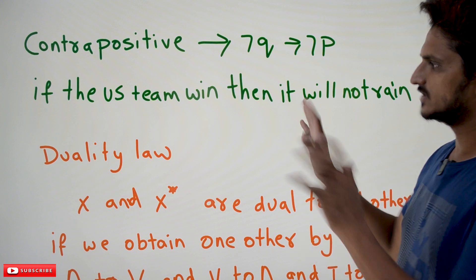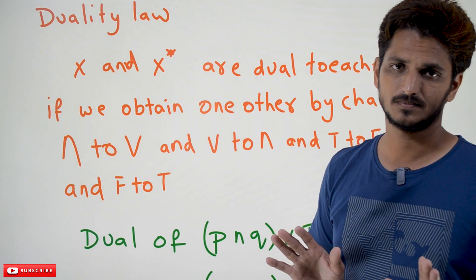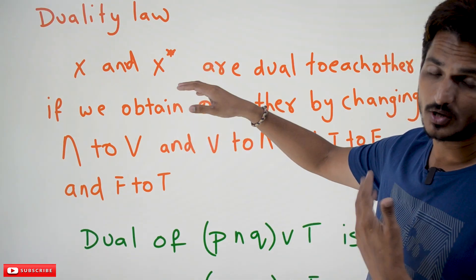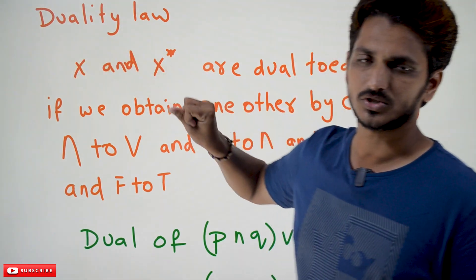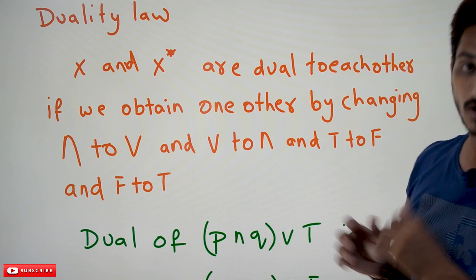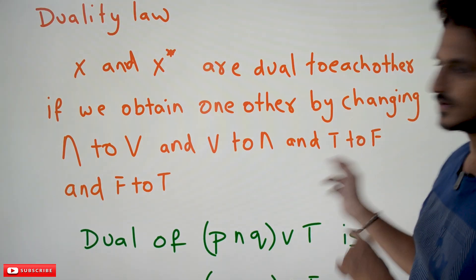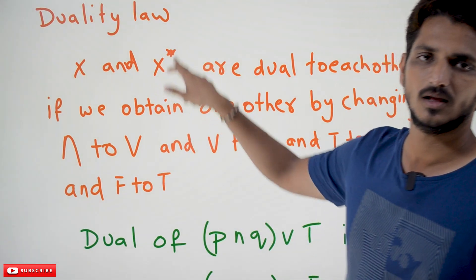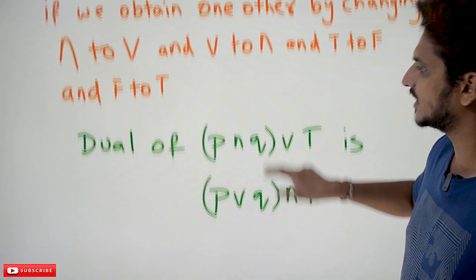Next, coming to the duality law. Let's take any two propositions X and X-star. We say X and X-star are dual to each other when we can obtain X-star from X by changing conjunction to disjunction, disjunction to conjunction, true to false, and false to true. Whatever equation you obtain should equal X-star — then we say the two equations are dual to each other.